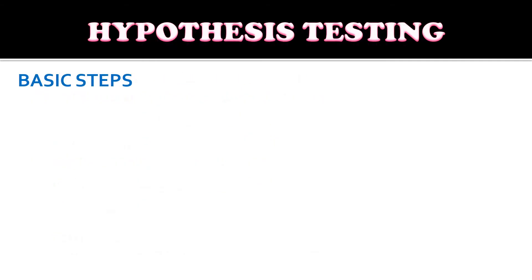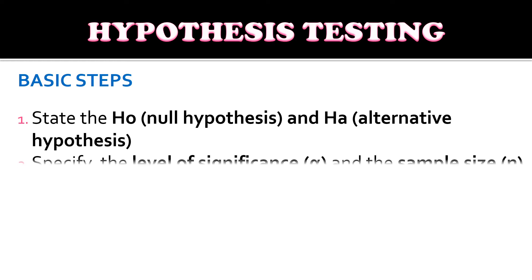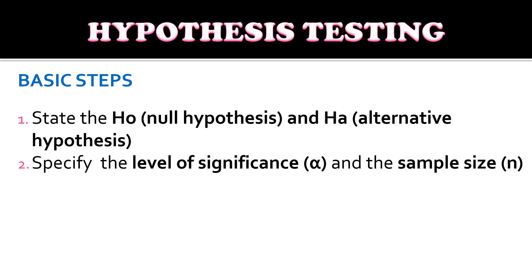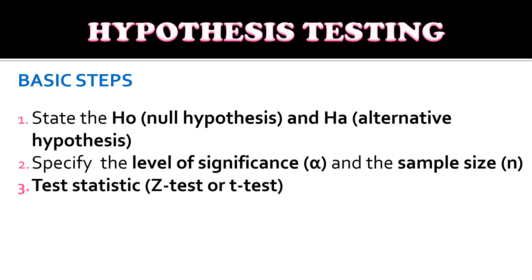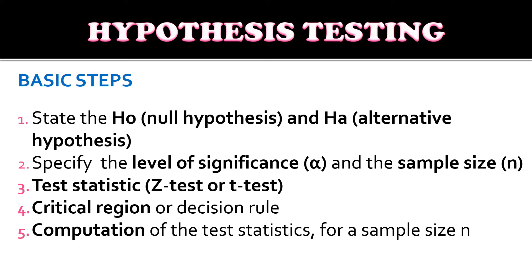The basic steps in hypothesis testing are: first, state the null hypothesis and the alternative hypothesis; second, specify the level of significance and the sample size; third, identify which test statistic to use — either Z-test or T-test; fourth, identify the critical region or decision rule based on the level of significance; fifth, compute the test statistic; and sixth, apply the decision rule and state the conclusion.